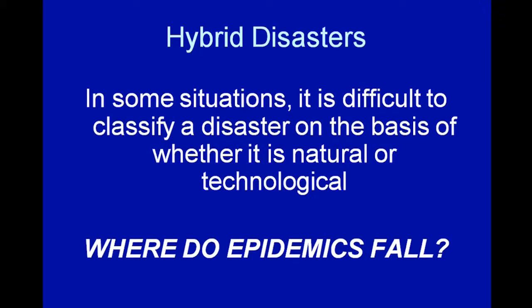I am quite sure you can name disasters recently happening in your region and district. You can also refer to literature or Google what has happened globally related to technological disasters. As I mentioned earlier, in some situations it is difficult to classify a disaster as natural or technological — that is the concept of hybrid disasters. For example, our previous president declared HIV a disaster in Tanzania. Is HIV natural? Is it technological? No — most epidemics fall under the hybrid disasters.